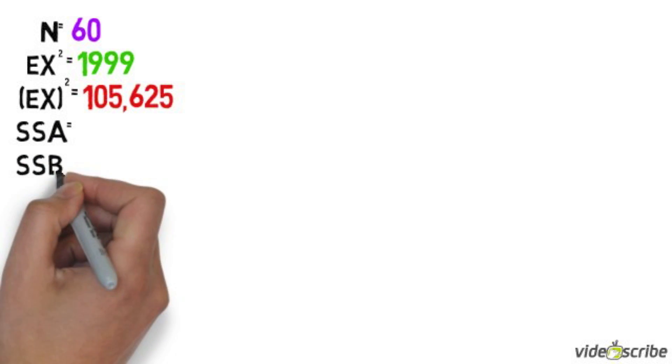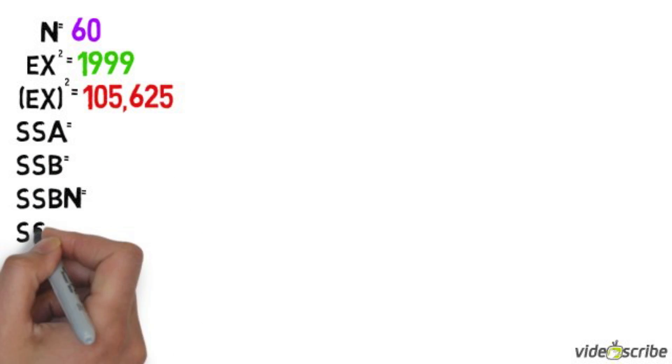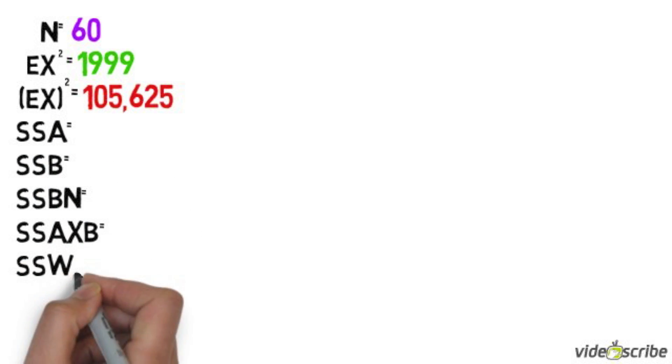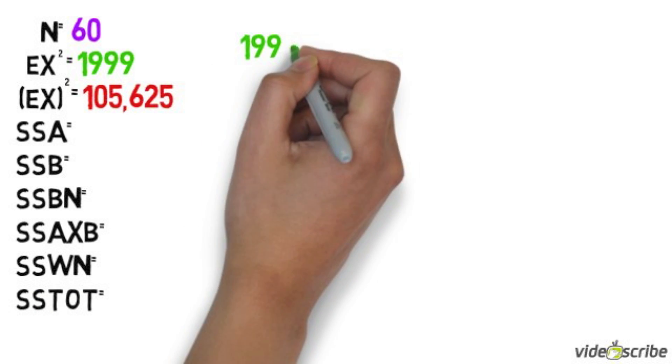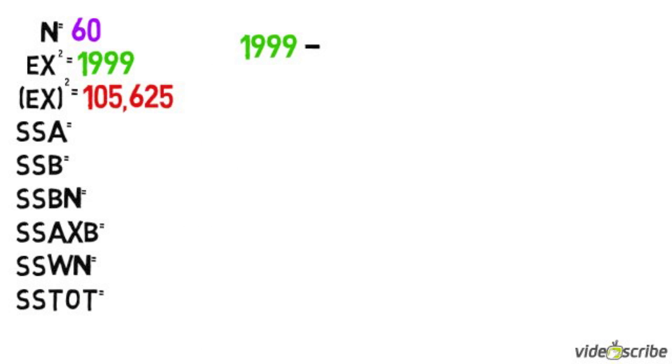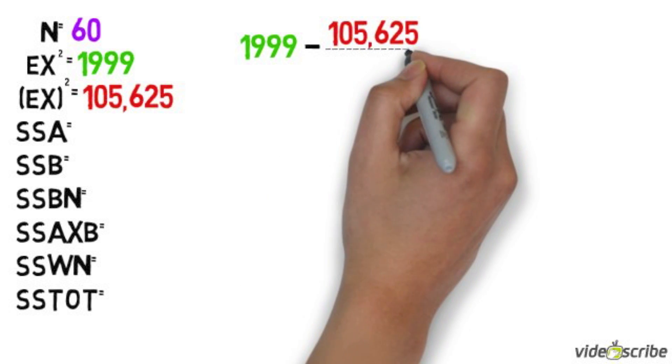Now we're going to find sum of the squares for factor A, factor B, between groups, interaction, within, and total. To find sum of squares total, we take our sum of x squared minus squared sum of x and divide it by n.